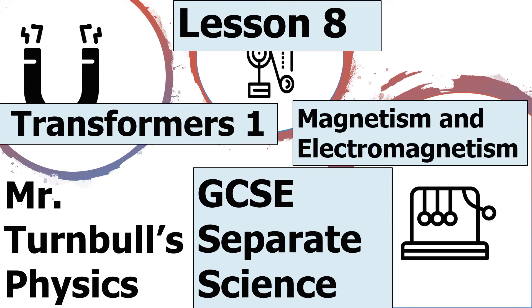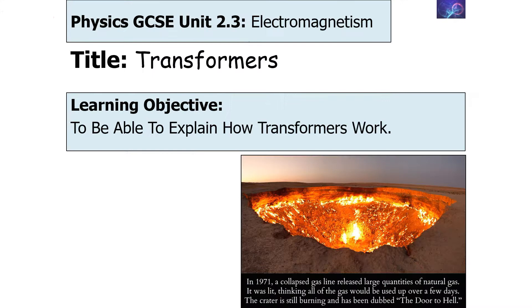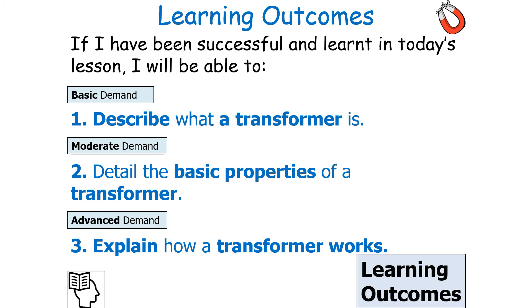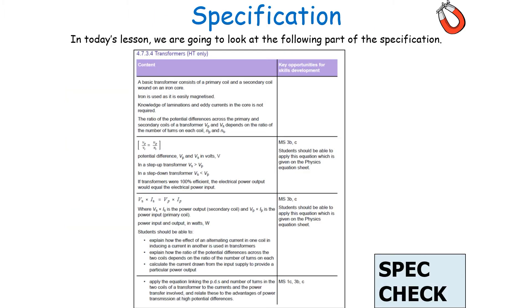Hello and welcome to today's lesson on transformers, which is part of the magnetism and electromagnetism topic in GCSE Separate Science Physics. In today's lesson, we're going to look at explaining how a transformer works. If we've been successful in today's lesson, we should be able to describe what a transformer is, detail the basic properties of a transformer, and explain how a transformer works.